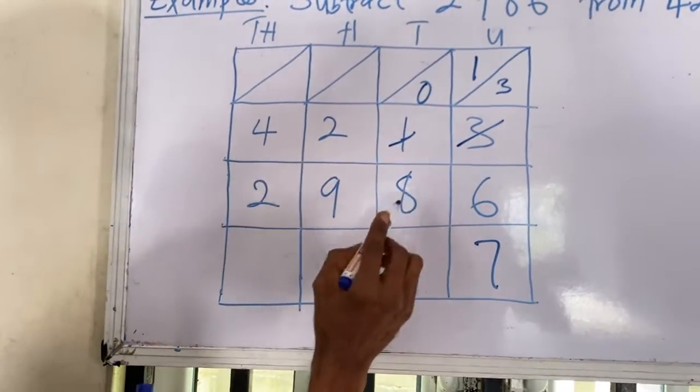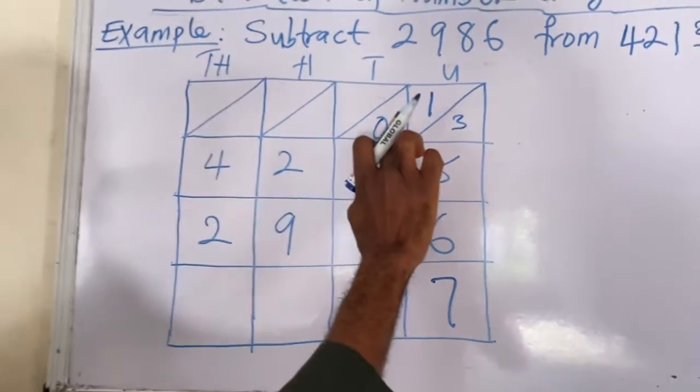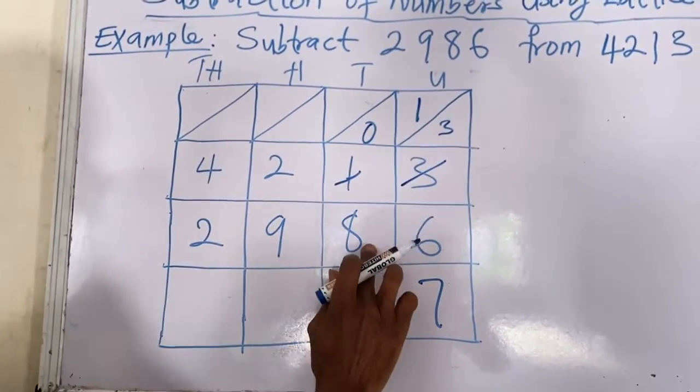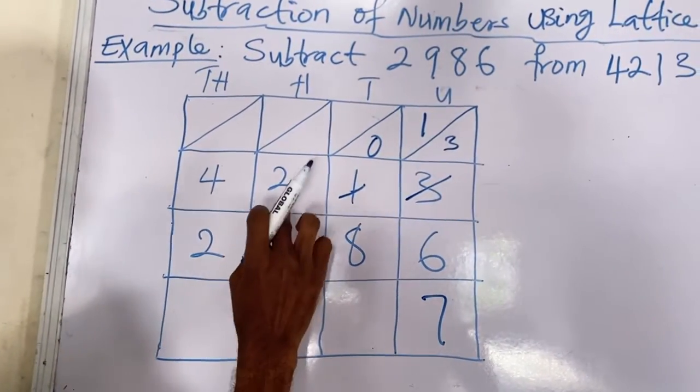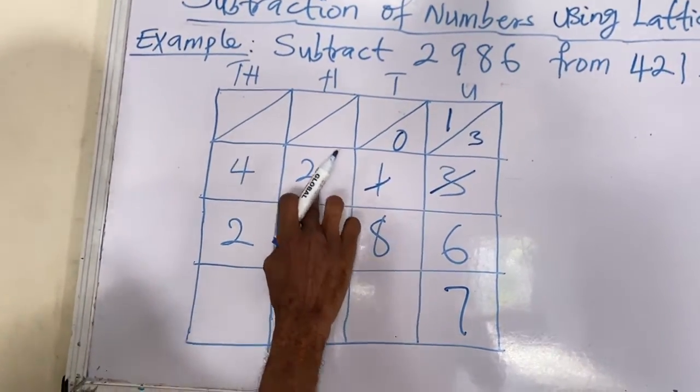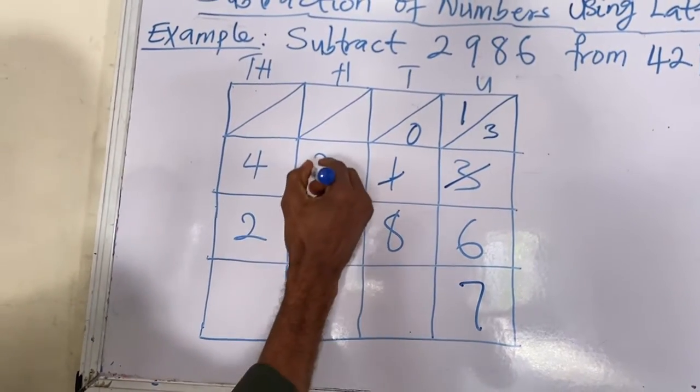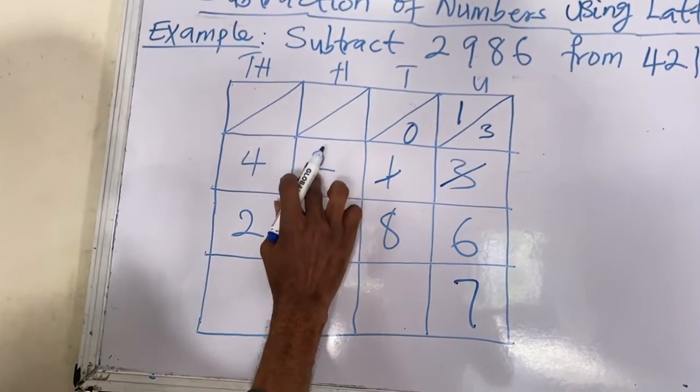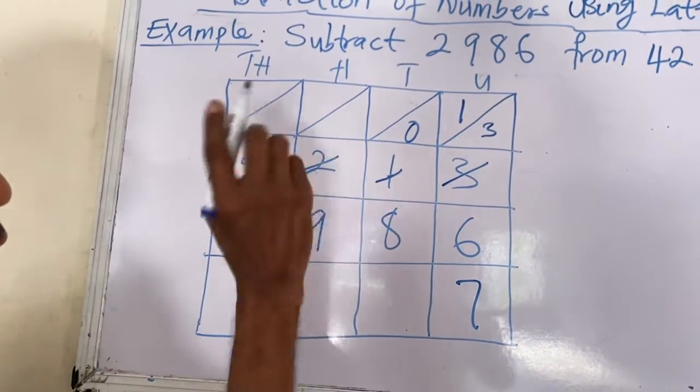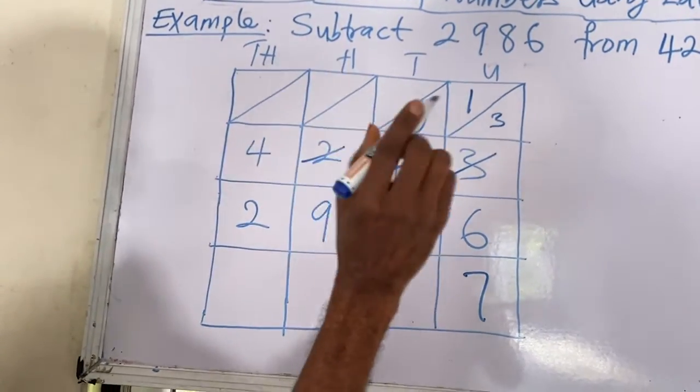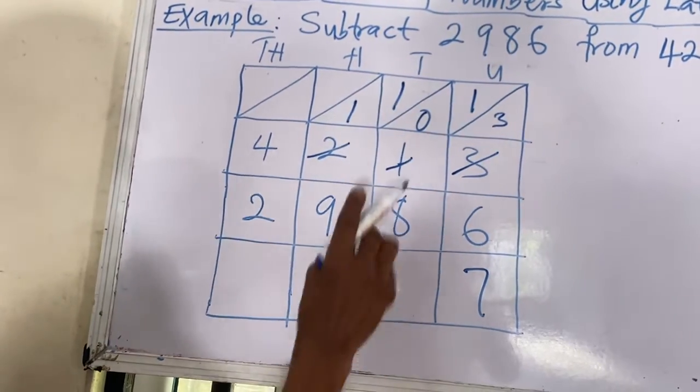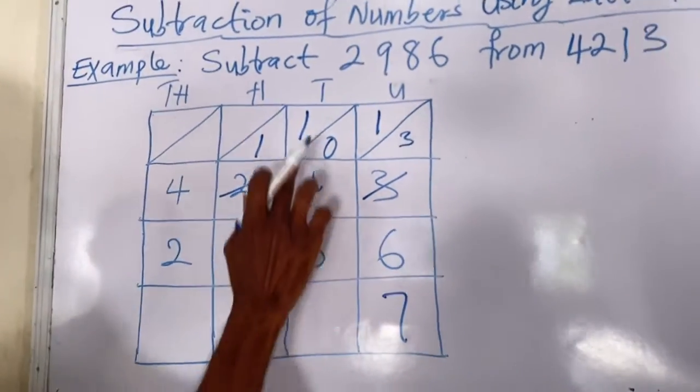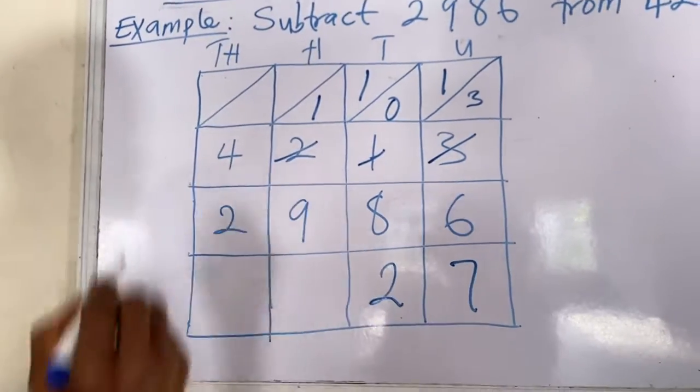Then we move to this place. It becomes 0 and 8 here. You cannot remove 8 from 0, it's impossible. You move to this one. Come and take 1. When you take 1 from here, you are left with 1 in this place. Place it here. The one you just took, put it here. It becomes 10. So 10 minus 8 gives you 2.